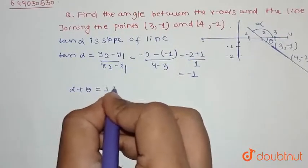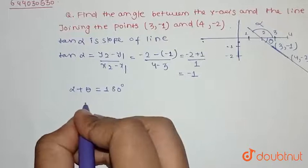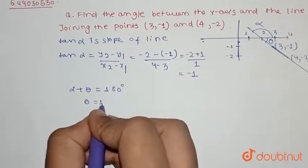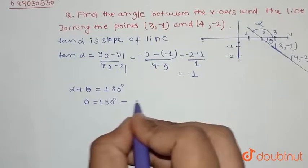Alpha plus theta equals 180 degrees, so theta equals 180 minus alpha.